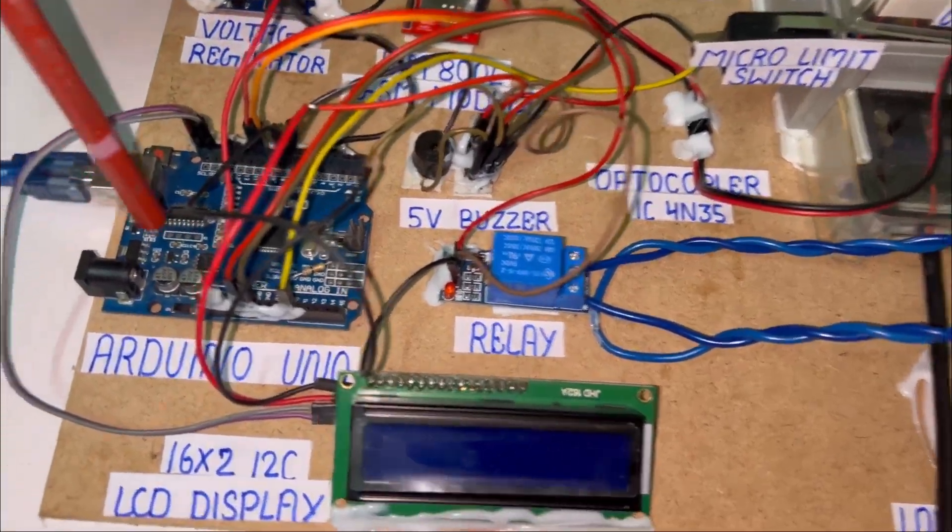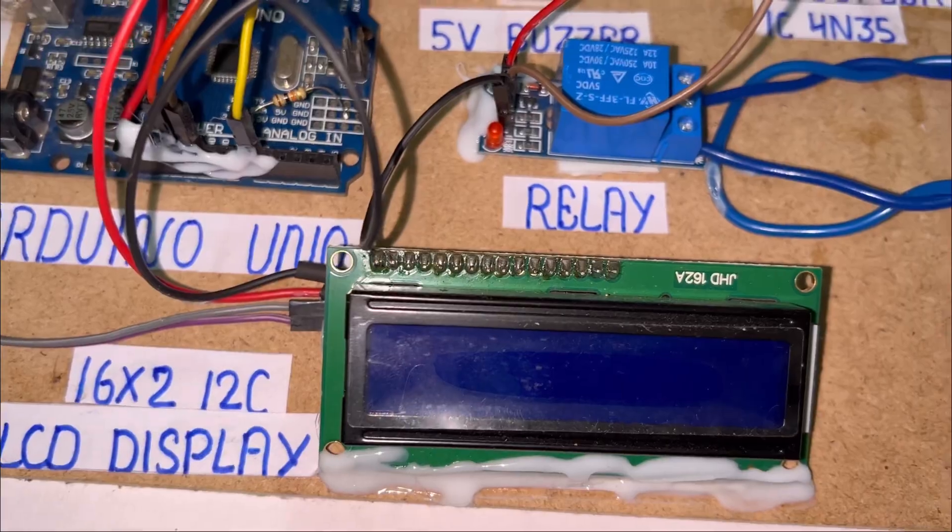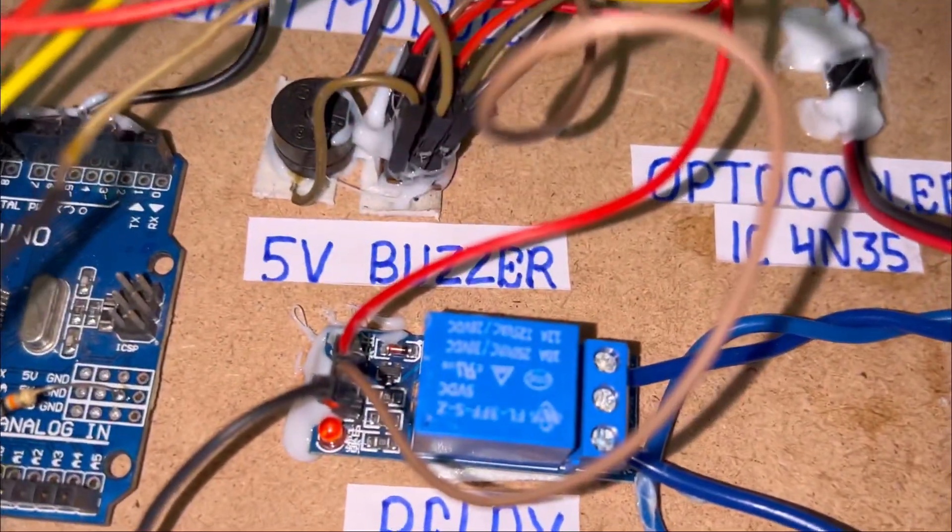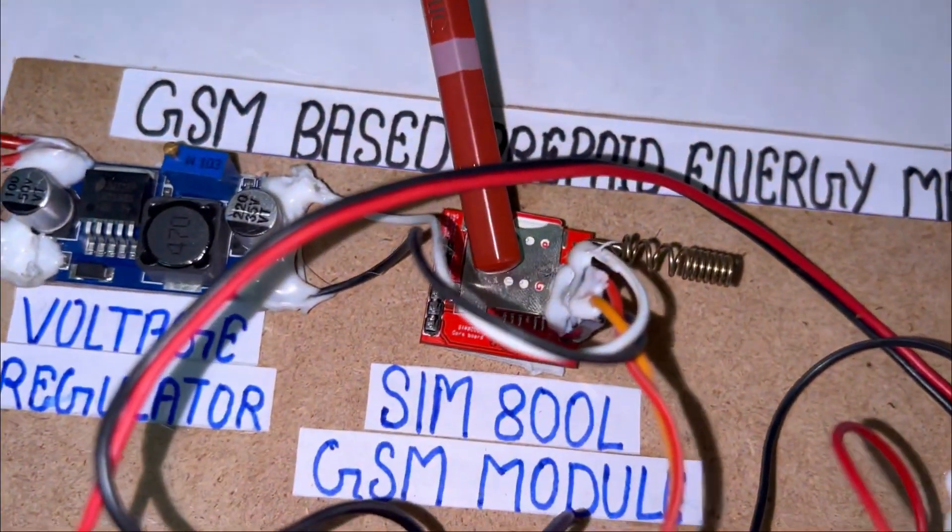This is the Arduino Uno, and here is the 16x2 LCD display. Here is the single-channel relay, and you can see here is the 5-volt buzzer. This one is the GSM module 800L.